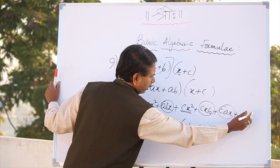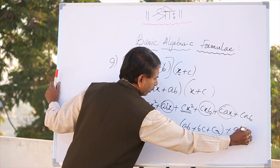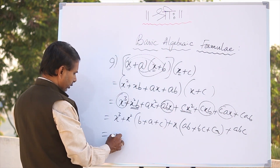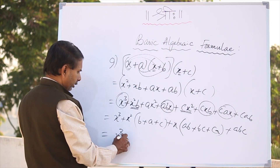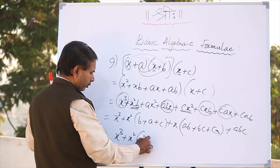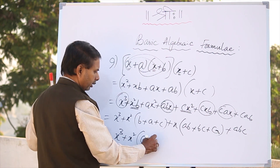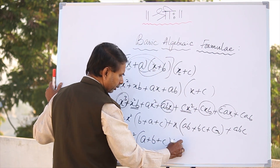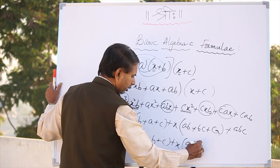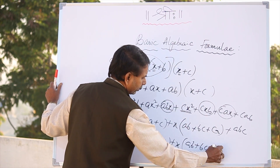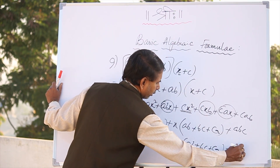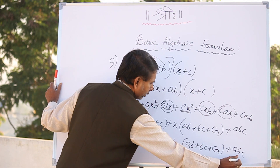Rearranging, we can write it as x cube plus x square into a plus b plus c, plus x into ab plus bc plus ca, plus abc.